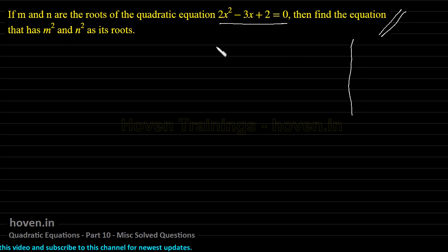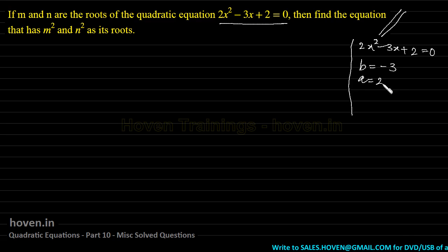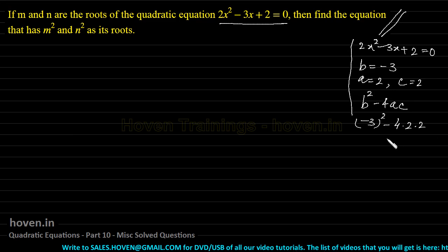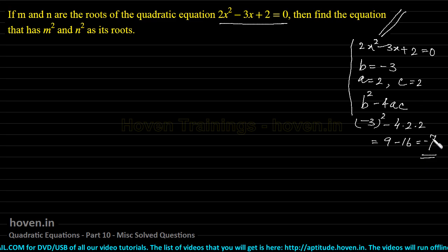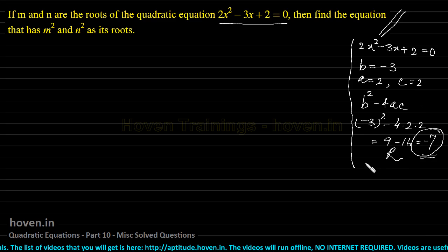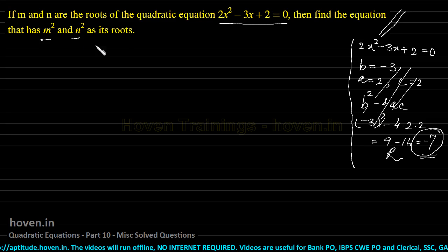Let me explain on the rough side first. Here b = -3, a = 2, and c = 2. Calculating b² - 4ac: (-3)² - 4×2×2 = 9 - 16 = -7. You can't find the roots manually because they are not real numbers — they fall outside the domain of real numbers. So you cannot find them with your present knowledge.